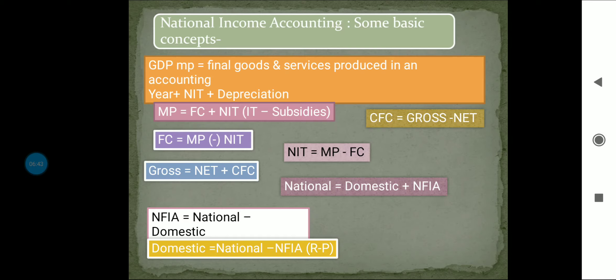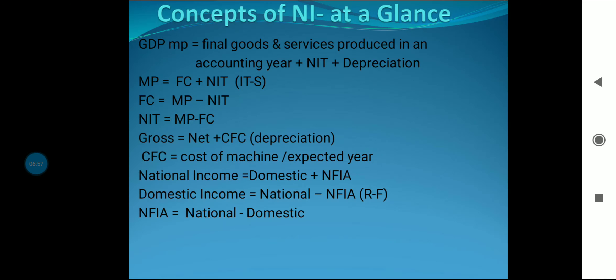National income equals domestic income plus NFIA. And NFIA equals national minus domestic. Domestic income equals national income minus NFIA, which represents factor income received minus payments made abroad.